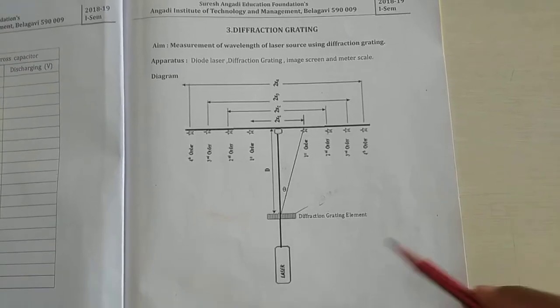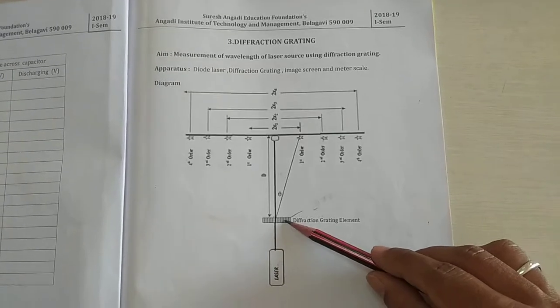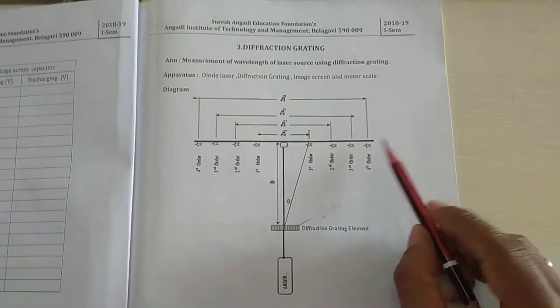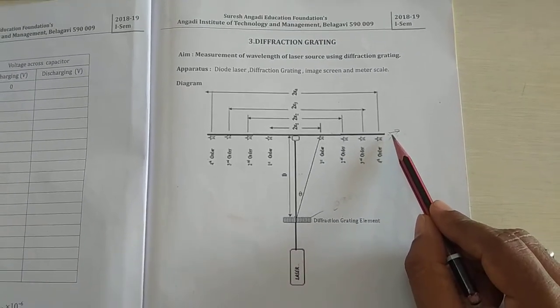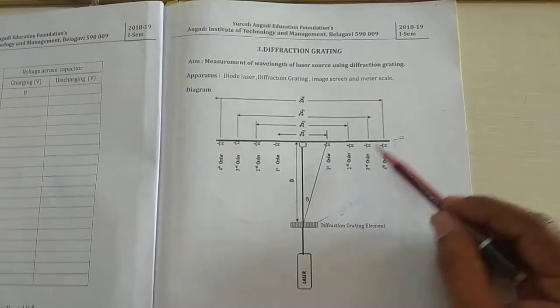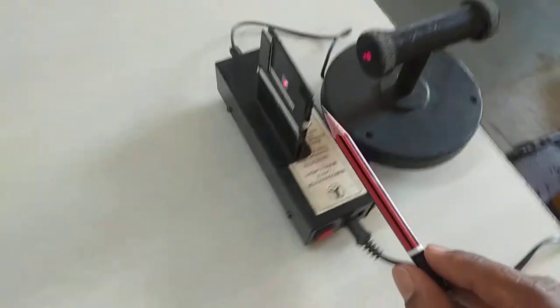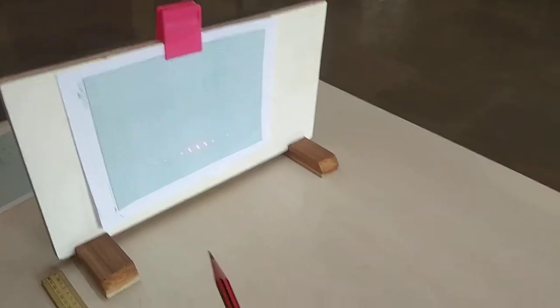The experimental setup can be shown here. This is the laser source, this is the diffraction grating element, and on the other side this is the screen. The diagram shows the laser source, the diffraction grating element, and the screen on the other side.